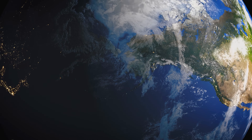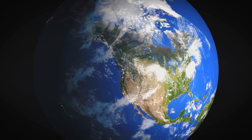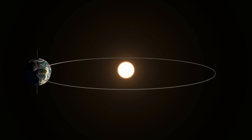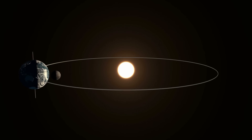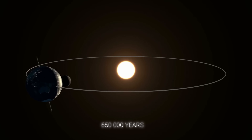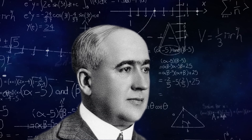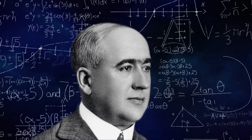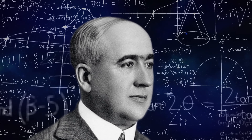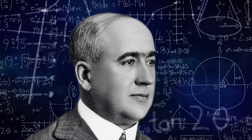After years of hard theoretical work, the mathematician concluded that the Earth's orbit had changed in three cycles of varying lengths over 650,000 years. Despite initial skepticism, geologists later confirmed his theory, sparking interest in his work after his death.